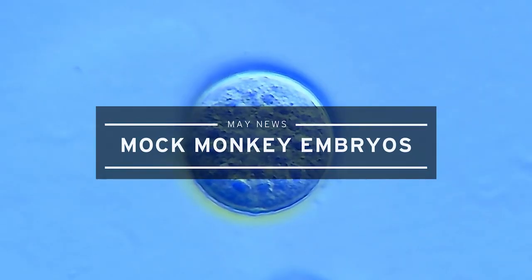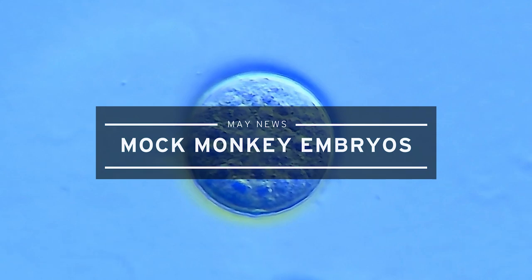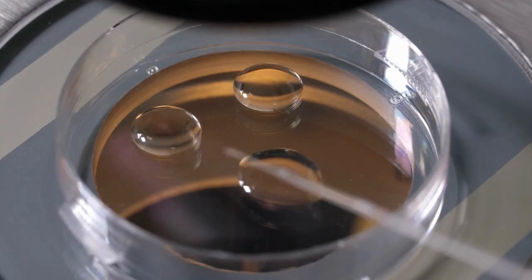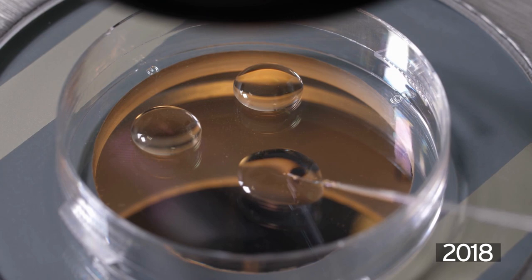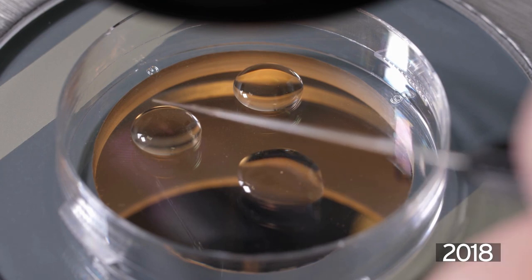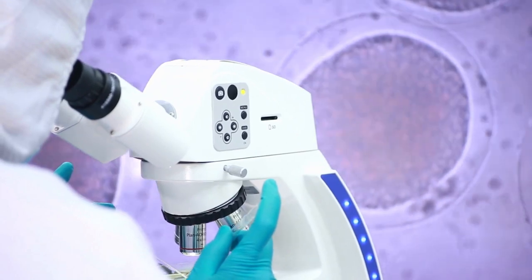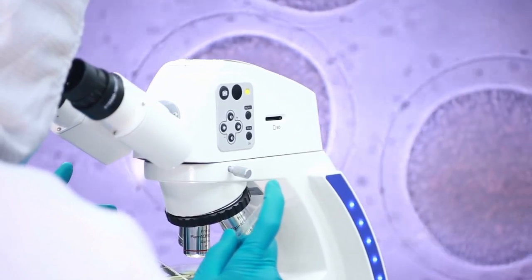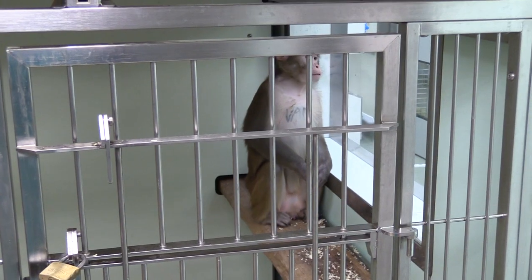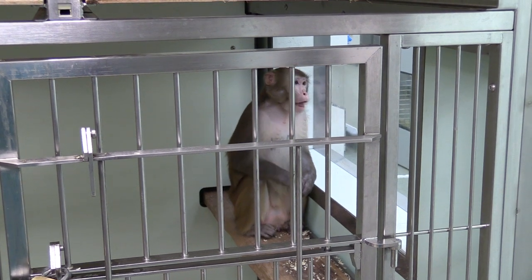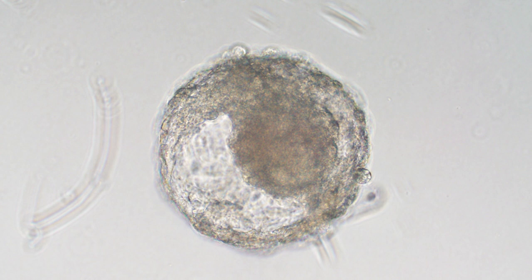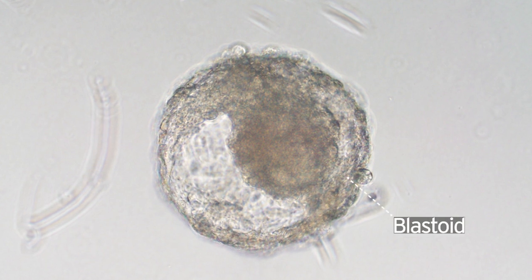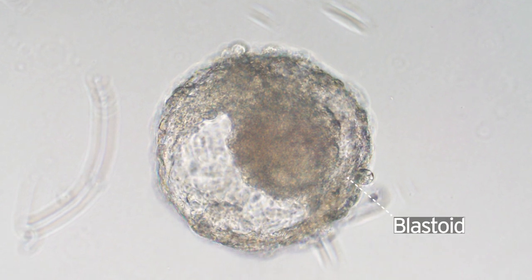Scientists in China have created the first mock embryos grown from monkey cells. Mock mouse embryos were first created in 2018 but these embryos have limitations and they are not as comparable to human development. Which is why researchers at the Chinese Academy of Scientists have created blastoids using the embryonic stem cells of cynomolgus monkeys. Raised and housed in cell cultures, the blastoids can survive for up to 18 days and develop further than any previous blastoid of this nature.